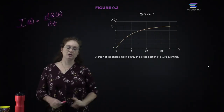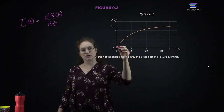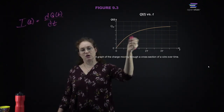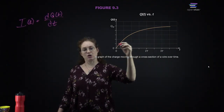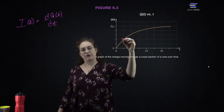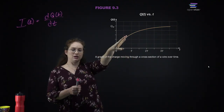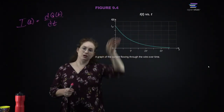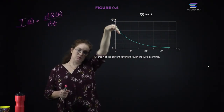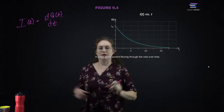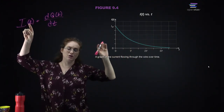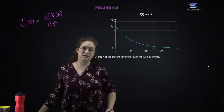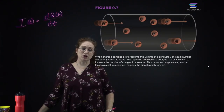Toggling between these graphs, you can see that the slope in this section is rather large, then the slope flattens off and decreases. The current is equal to the instantaneous slope of the charge — the time derivative of the charge.